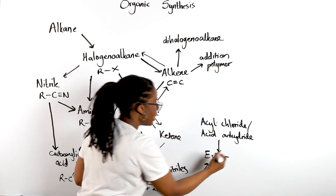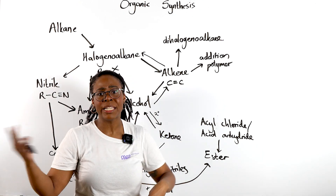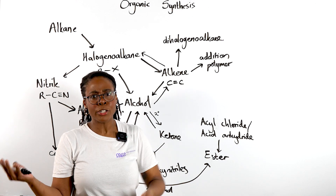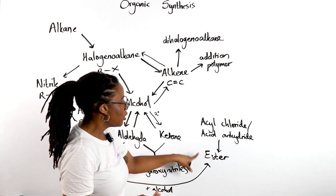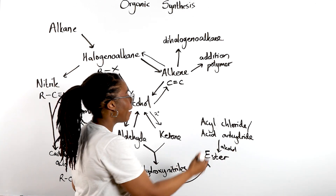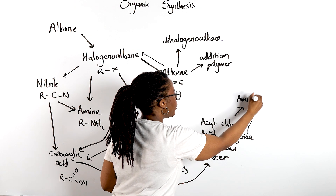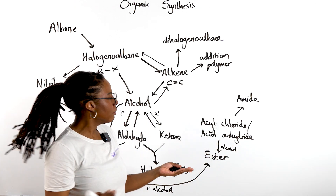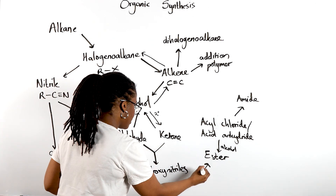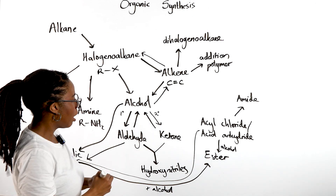With an acyl chloride or acid anhydride, the reaction is irreversible and we can carry it out at room temperature, whereas starting from a carboxylic acid we need heat and a catalyst. Acyl chlorides and acid anhydrides undergo nucleophilic addition-elimination reactions. If the nucleophile is an alcohol, we produce an ester. We could also turn this acyl chloride into an amide if we react it with ammonia or an amine. Or if we add water, we could turn the acyl chloride back into a carboxylic acid.